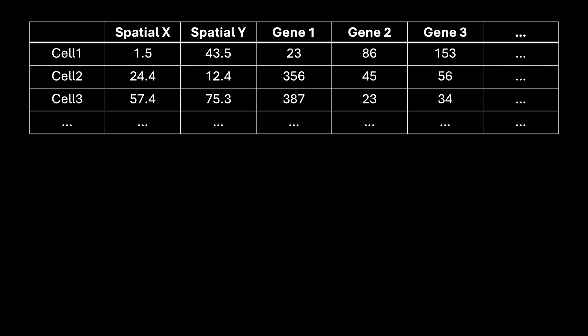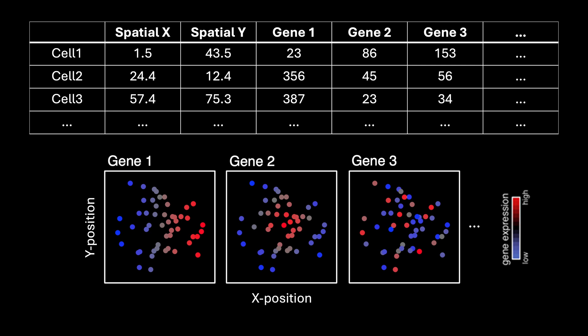In spatial transcriptomics, we often have data represented as the positions of our cells and the gene expression measurements associated with these cells, for hundreds to thousands of cells and thousands of genes. If we visualize this data by representing cells as points with spatial positions encoded along the x and y axes, and gene expression magnitude encoded as a divergent color hue — with red being high expression and blue being low expression — we can begin to see some spatial gene expression patterns.